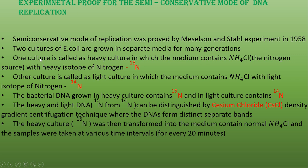For that, the bacterium E. coli was grown in separate media for many generations. E. coli can multiply within 20 minutes, producing new replicated cells and DNAs. Two cultures of E. coli are grown in separate media: one containing heavy isotope nitrogen-15 as the nitrogen source, and another containing the normal light isotope nitrogen-14. The heavy culture medium contains ammonium chloride with nitrogen-15, and the light culture contains ammonium chloride with nitrogen-14.